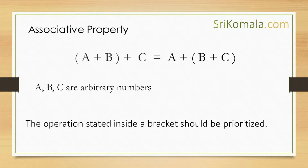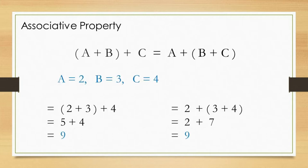Here, A and B and C are arbitrary numbers, or any numbers. To understand this property easily, let us use certain numbers as examples. If you are familiar with the associative property, you can skip this part.